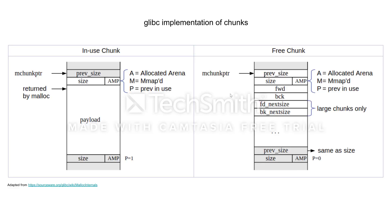After we call free, it changes structure. We still have the previous size of the chunk that comes before it and our current size, and these three flags are still set. However, we then put a pointer to the next chunk in the bin that this free chunk is assigned to, and a backwards pointer to the previous chunk in that bin. There are different types of bins depending on what size this chunk is, and it will point to other chunks that have been freed that are in that bin. Then we have what's remaining of our payload — importantly, the payload is not overwritten when it is freed. The only parts that are overwritten are these four fields. Then in the next chunk, you can see that the previous-in-use pointer is now set to zero because this chunk has been freed, allowing this chunk to jump back based on what the previous size is.